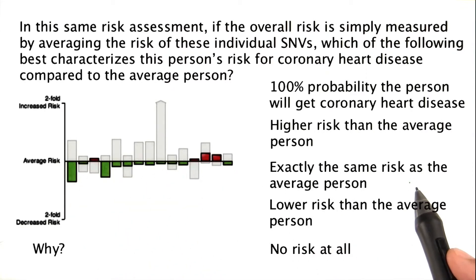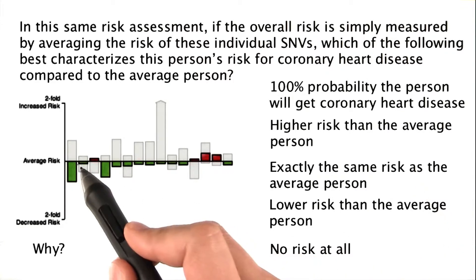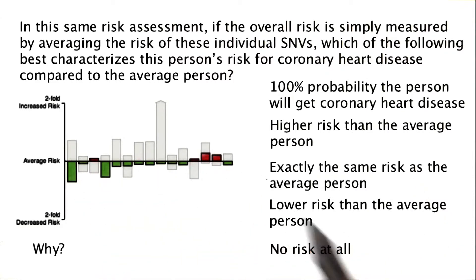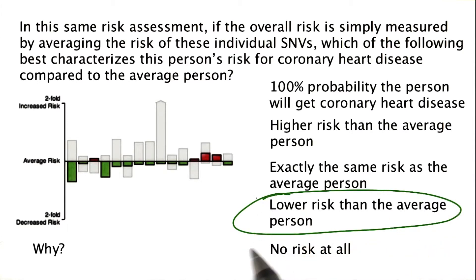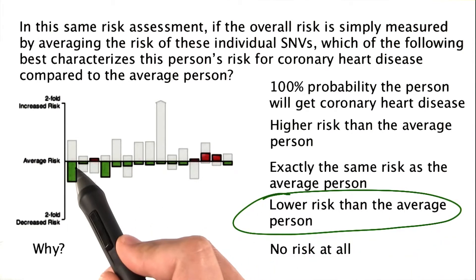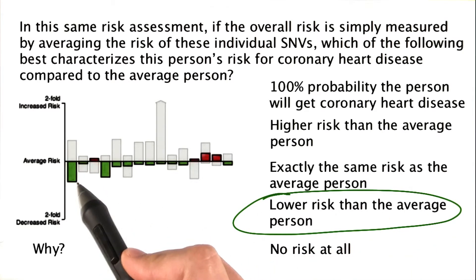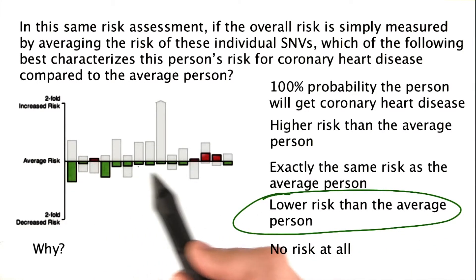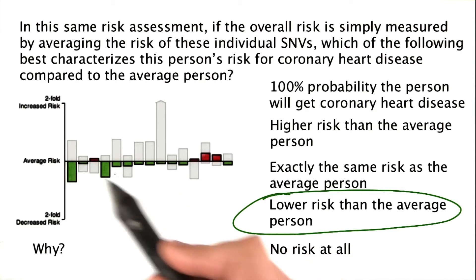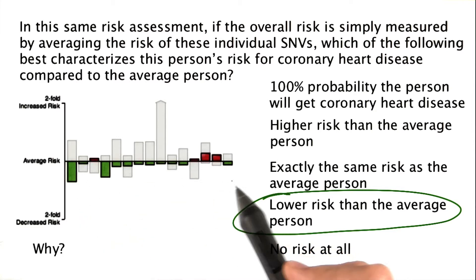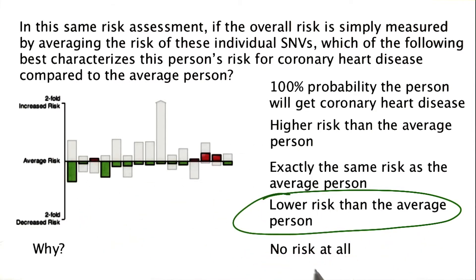Exactly the same risk as the average person? No, because then everything would be right here at the line. Lower risk than the average person? Yeah, that's something we would say. We see bigger bars that are green and more of them going down, indicating lower risk than higher risk. And not no risk at all, because there's always some risk.